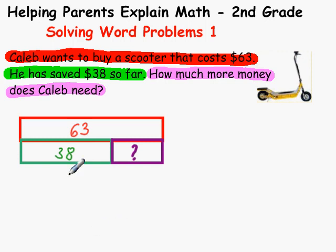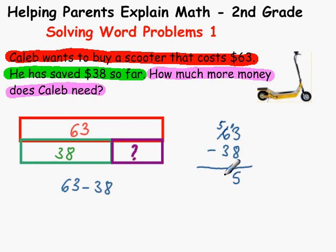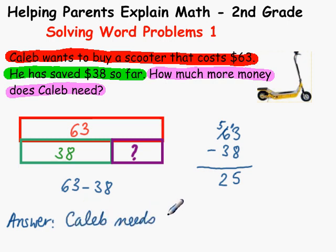So we need to find 63 minus 38. We go and do it vertically: 63 minus 38. We need to borrow, so this becomes a 5 and this becomes a 13. 13 minus 8 is 5, and 5 minus 3 is 2. And so our answer is: Caleb needs $25 more.